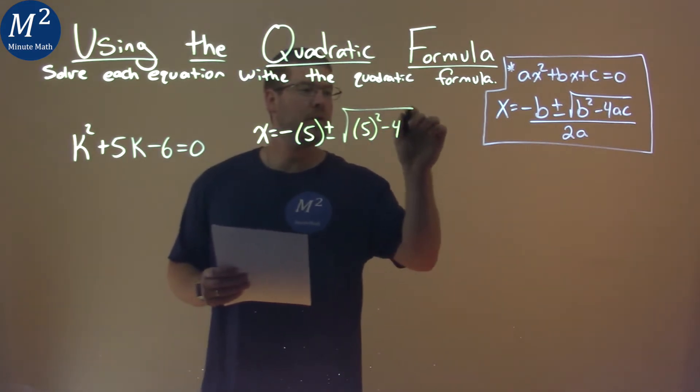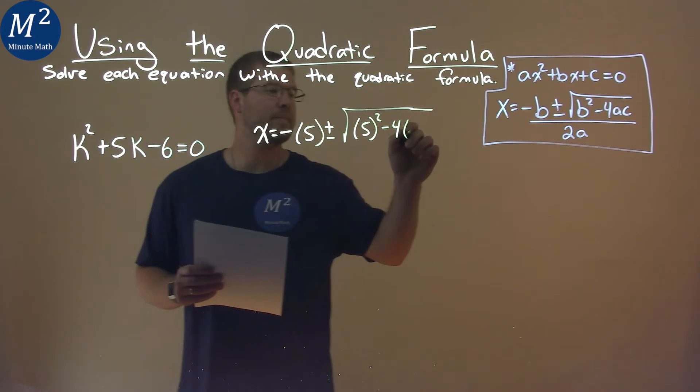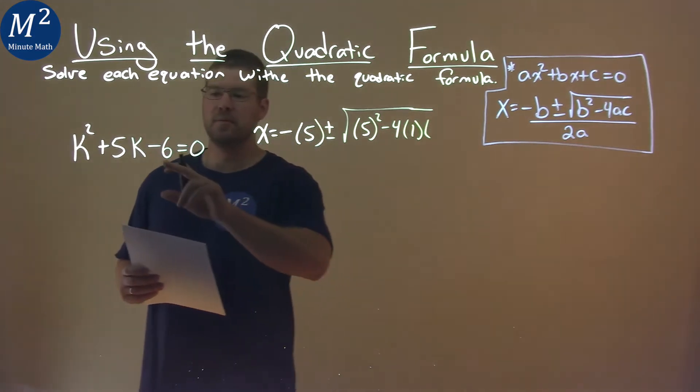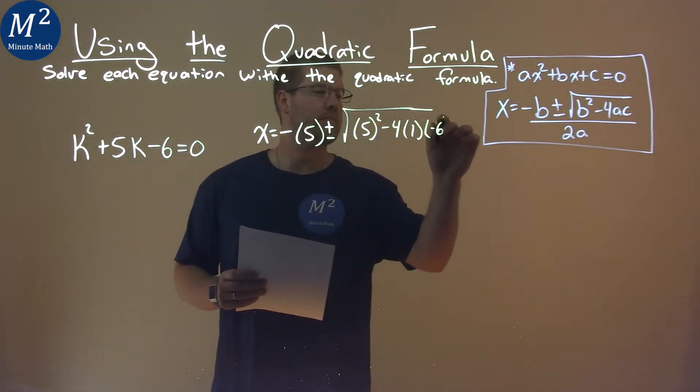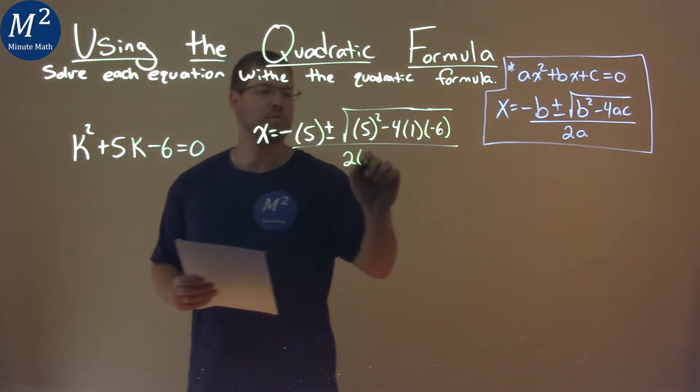minus 4 times a, the coefficient from k squared which is 1, and c which is negative 6, all over 2 times a, which is 1.